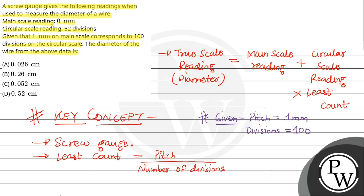...divisions are given as 100. So least count equals pitch upon divisions, which is one upon hundred, equal to 0.01 mm.